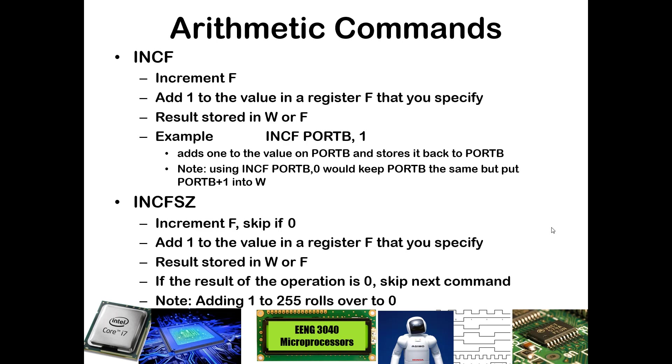Let's go ahead and begin and talk about the different commands that are available. First of all, there is the INCF, which is short for increment F. That simply adds 1 to the value in the file register that you specify. You do have the option of putting that value plus 1 into the W register instead of back into the register. If I put in INCF PORTB, 1, that would increment the value in the PORTB register and put it back into PORTB itself. If I did INCF PORTB, 0, that would put the value of PORTB plus 1 into the W register and would leave what's in PORTB unchanged.